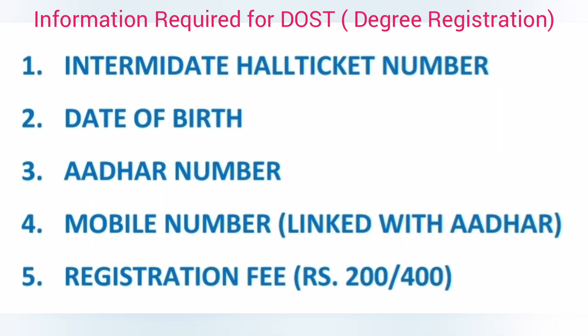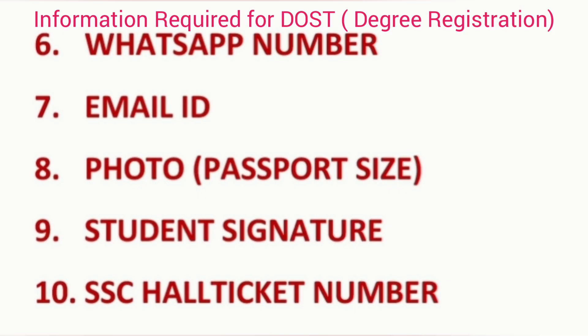First, information required for registration. First, you need your intermediate hall ticket number. Second, date of birth. Third, Aadhaar number. Fourth, mobile number — this mobile number must be linked with Aadhaar. Next, registration fee, that is 200 rupees. Next, while you are registering, it is asking for WhatsApp number and email ID.